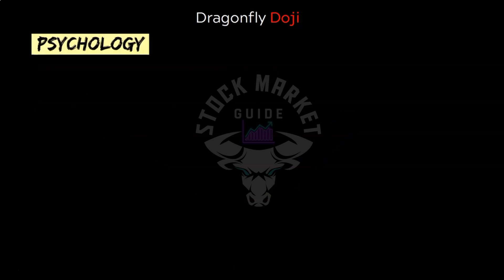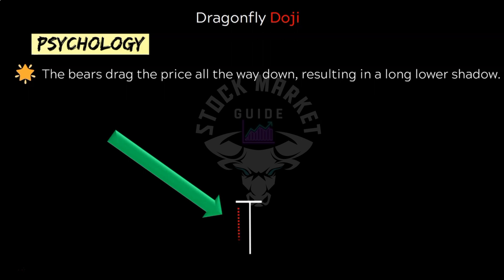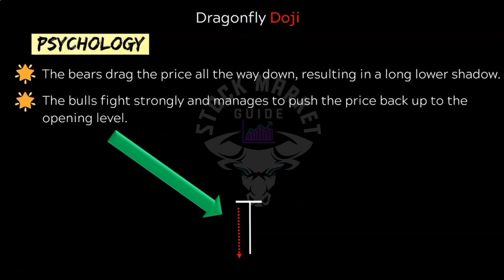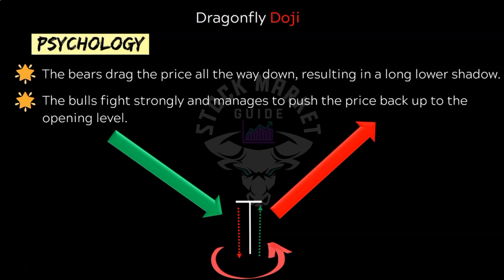The psychology behind dragonfly doji: assume continuous selling pressure in a downtrend. Today's session started bearish and was trading near the day's low with sellers in full control. But then buyers suddenly showed up near the lows and started absorbing the selling pressure. The market closed right back where it opened, leaving a massive wick at the bottom. This represents a change in sentiment from bearish to bullish — the lower wick reveals a failed attempt by sellers, and the price rises to close almost at the opening level. The expectation now is for reversal and uptrend to follow.